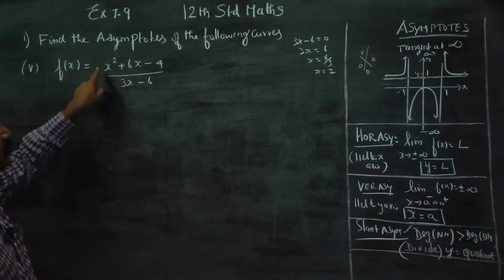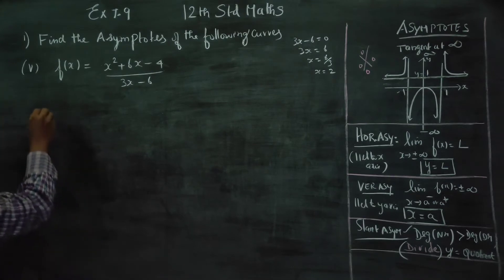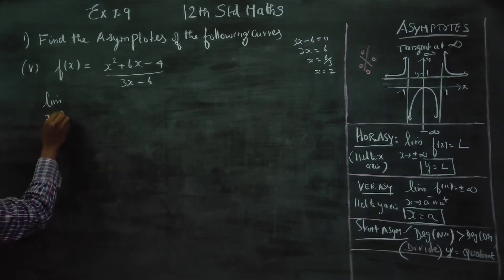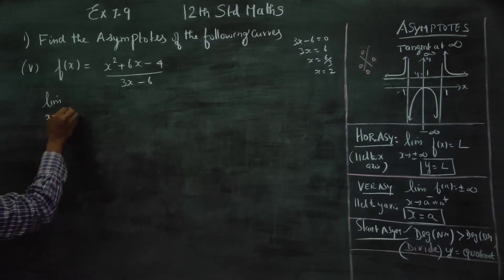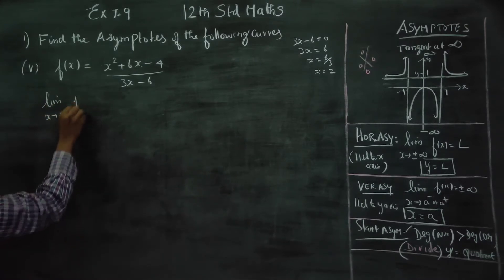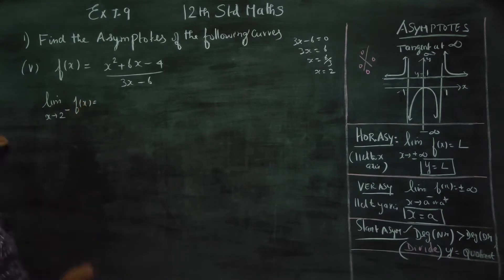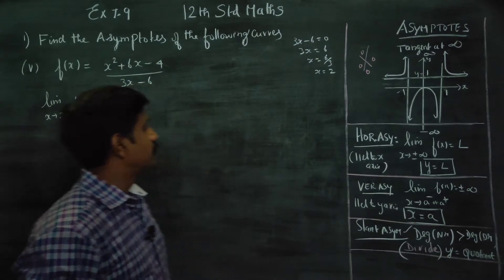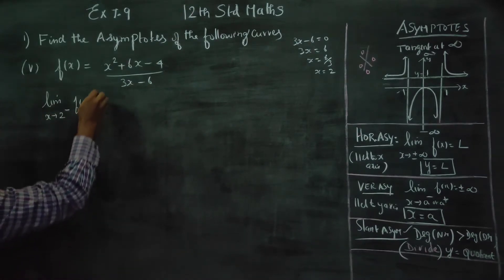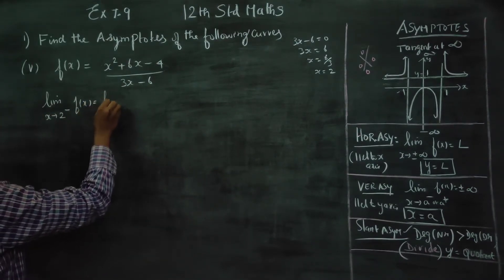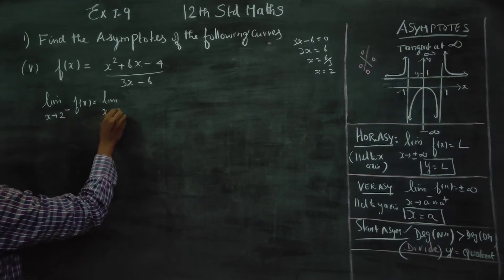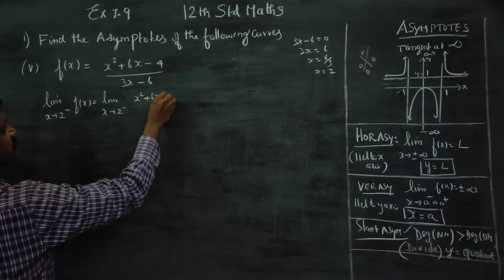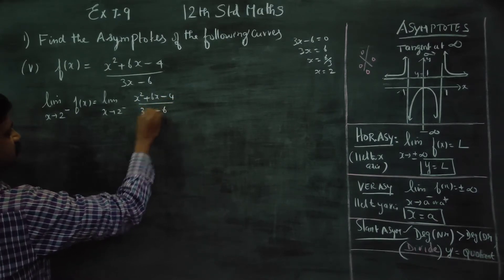In the function, I will substitute 2. We compute the left-hand side limit: limit as x approaches 2 from the left of f(x) = (x² + 6x - 4) / (3x - 6). We give a value slightly less than 2 for the left-hand side.